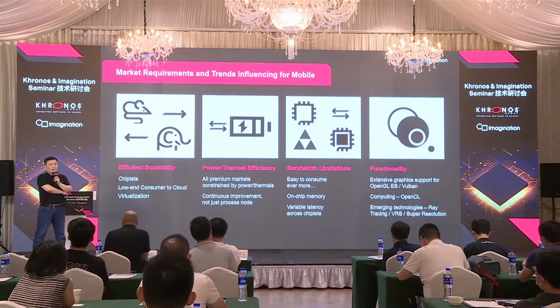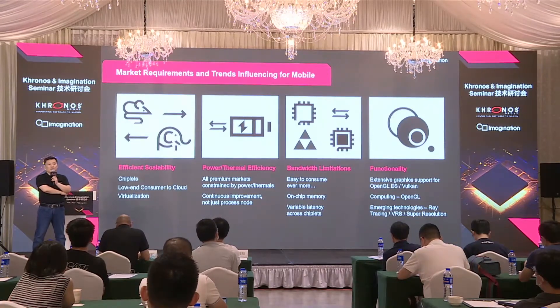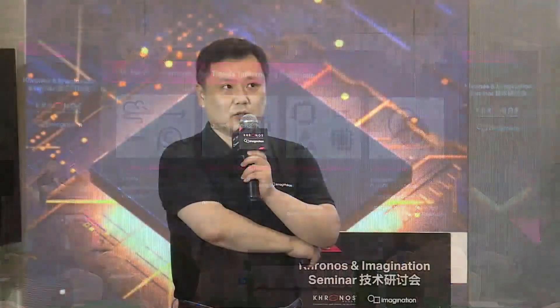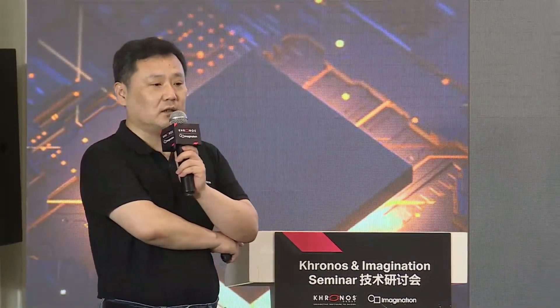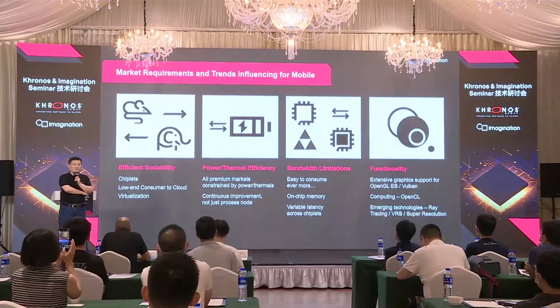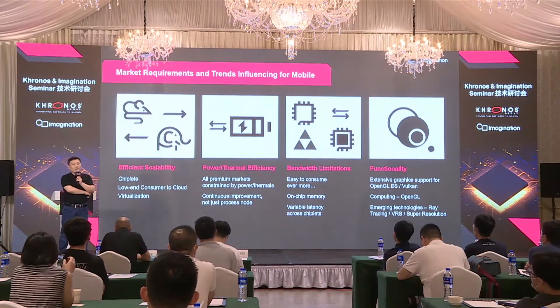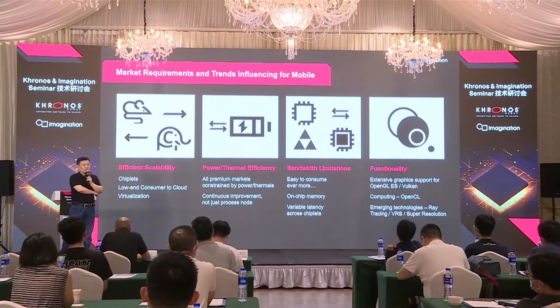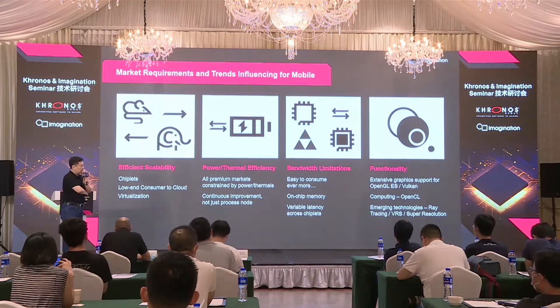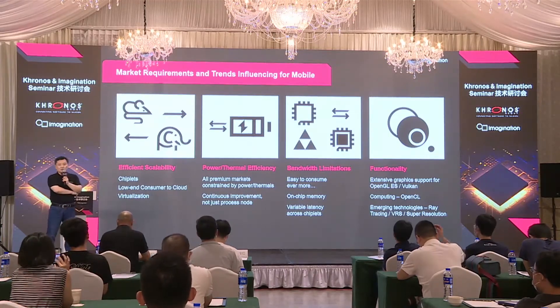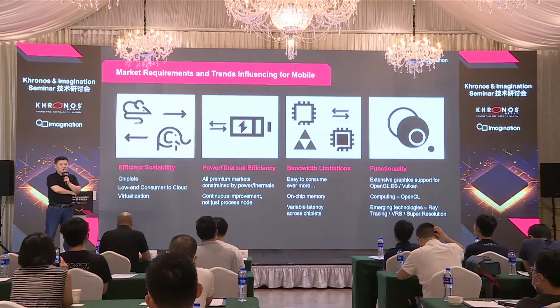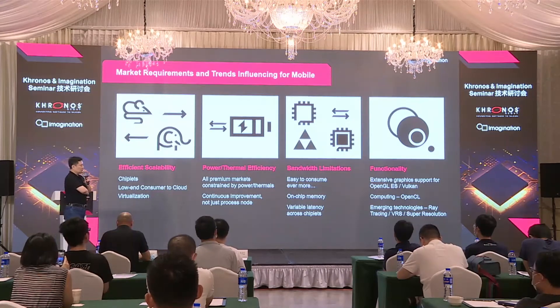The other thing is that we have the context of mobile devices, so power and bandwidth are always our priorities. In power and in memory bandwidth, we always have less limitation. The other thing is about functionality. We cooperate very closely with Khronos and other standard organizations and ecosystem partners. For OpenGL ES and Vulkan — that's for graphics — and for computing with OpenCL, we support all of those.